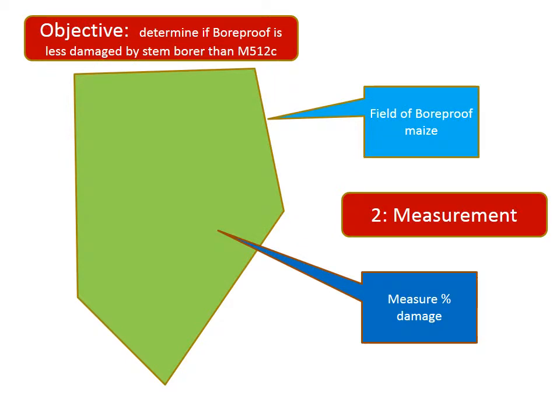Here is my first attempt at a design. I plant a field of bore-proof and measure the percent damage. That brings in the second principle of measurement. But once I have measured percent damage here, what can I do with it? I need something to compare it with.